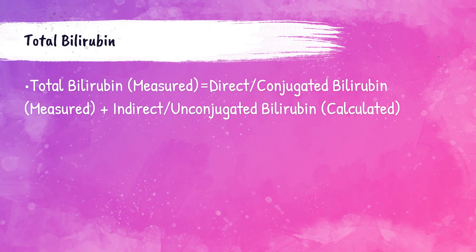To recap: bilirubin testing is used to assess the function of the patient's liver. Total bilirubin is measured by the clinical chemistry analyzer and includes both conjugated and unconjugated bilirubin. Direct or conjugated bilirubin is also directly measured. Unconjugated or indirect bilirubin is calculated using the formula: Total Bilirubin = Direct Bilirubin + Indirect Bilirubin. Please check out my other video called Indirect Bilirubin Practice Problems. This formula is something you need to memorize as an MLT or MLS student.